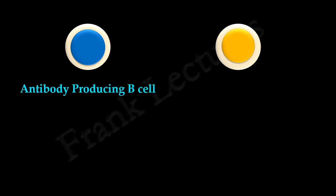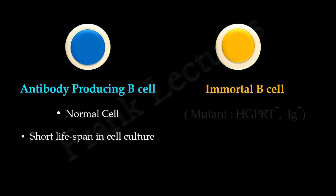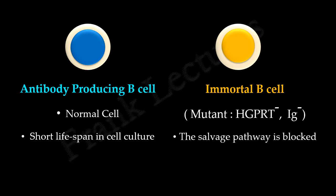Suppose we have two types of mammalian cells. First are the antibody-producing B cells, which have a limited lifespan in cell culture. Second are immortal B cells, which are capable of dividing indefinitely in cell culture. Importantly, these immortal cells are mutant for the genes producing HGPRT and antibodies — represented as HGPRT-negative and Ig-negative — meaning they cannot synthesize nucleotides by the salvage pathway and cannot produce their own antibodies.